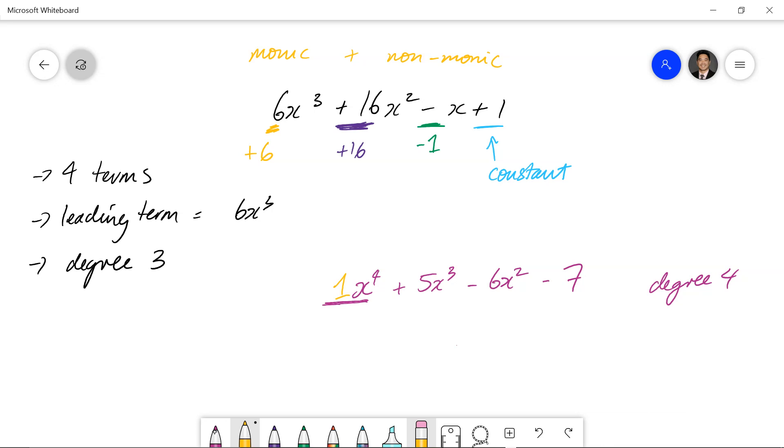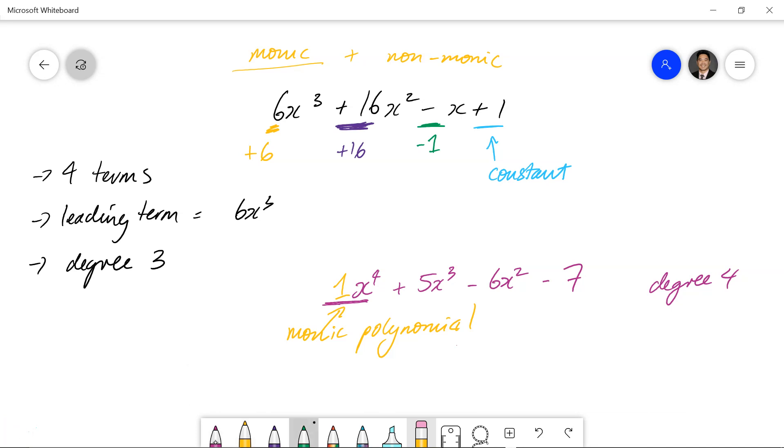And if you were to rethink back to our quadratics, we had monic, and we had non-monic. The monic expression, or monic quadratic, would be where the leading term had a coefficient of 1. And in this case here, this is considered a monic polynomial, because the leading term here, the leading term being of degree 4, has a coefficient of 1. If this number 1 was then replaced with 6x to the power 4, it's no longer monic, because the coefficient of the leading term is no longer 1.